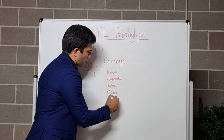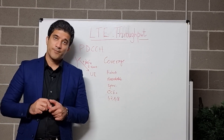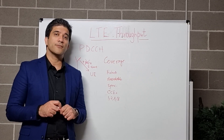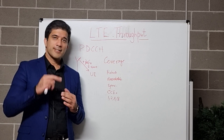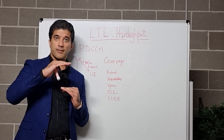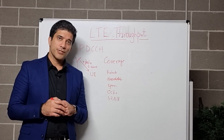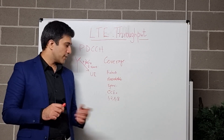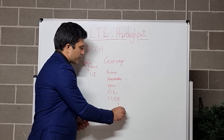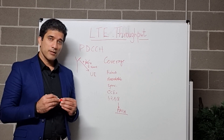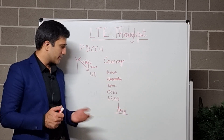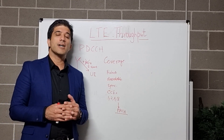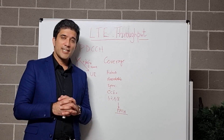A CCE is basically your Control Channel Element — I have done a separate video on that which you can look up on my channel. CCEs are like a stack of error protection. If you have a bad radio condition, you will use more CCEs to transmit that PDCCH. For example, in very bad radio conditions you will use 8 CCEs; less radio degradation, you use 4; in ideal radio conditions, you can use just 1.